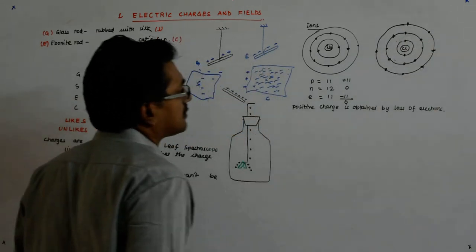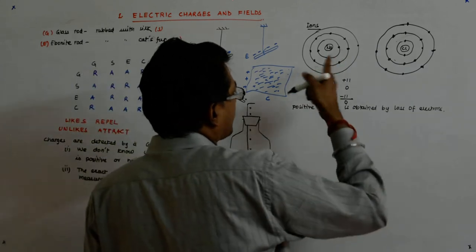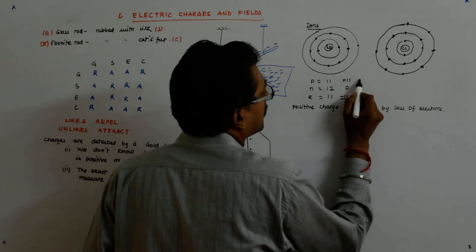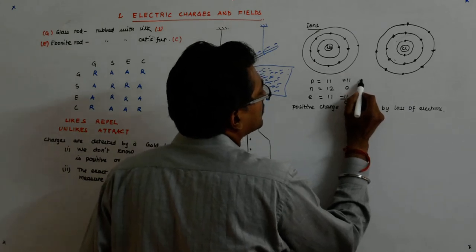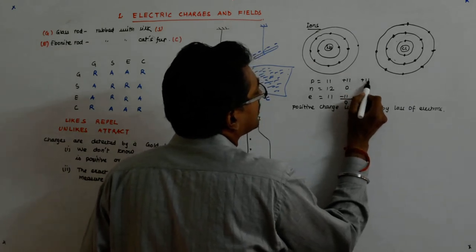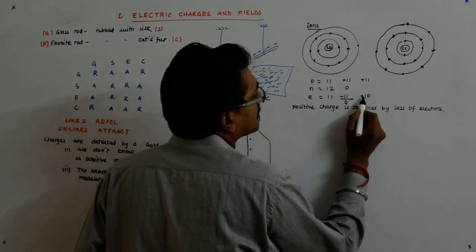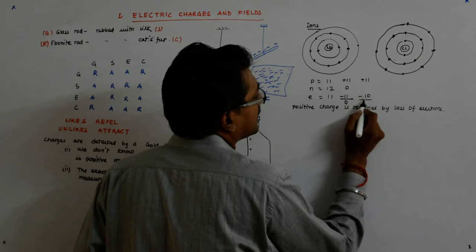I'm first talking about sodium. Suppose it loses one electron, so I have 11 protons, so plus 11, but only 10 electrons, so minus 10. The net is plus 1.